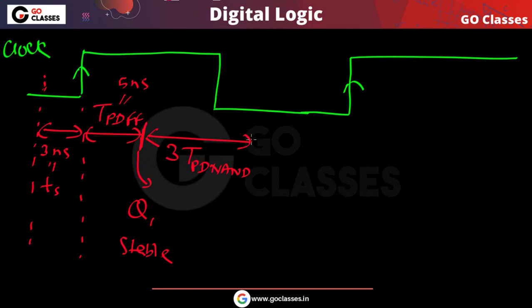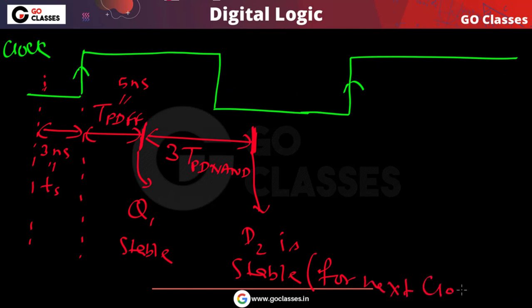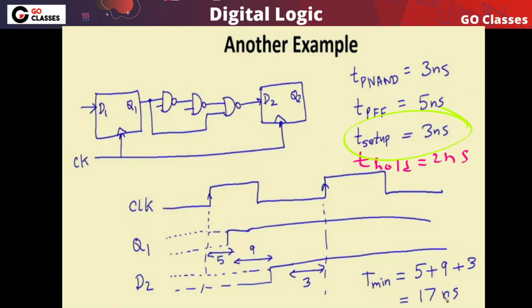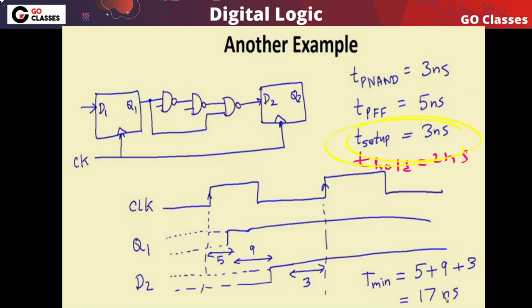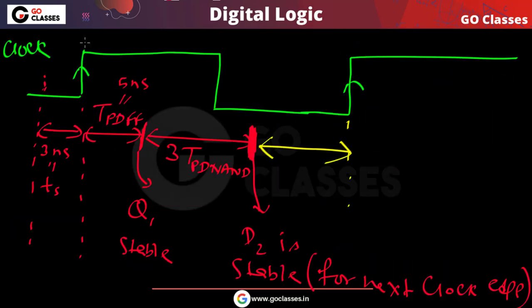Passing through three NAND gates adds 3 × 3 = 9 nanoseconds of delay. So after 5 + 9 = 14 nanoseconds from the rising edge, D2 is stable for the next clock cycle.